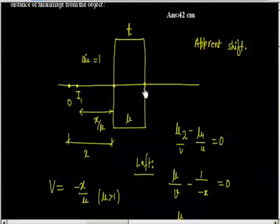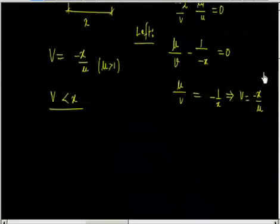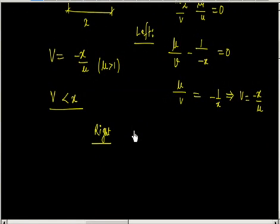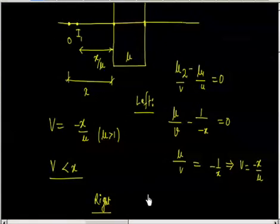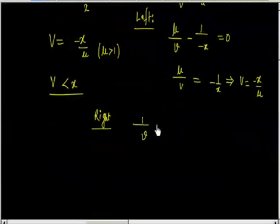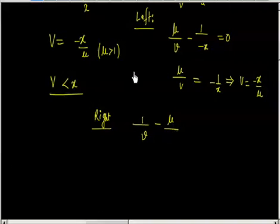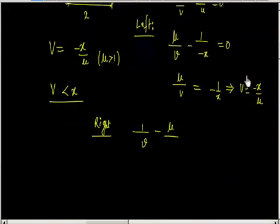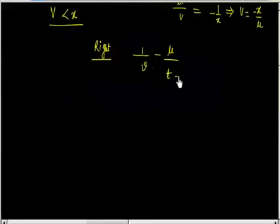Now let us consider the refraction at the second surface, that is the right surface. Applying the same formula: mu2/V minus mu1/U equals zero. Here mu2 is 1 since the ray is going from slab to air, and mu1 is mu. The total distance from the pole of the right surface to the object I1 is T plus x/mu.